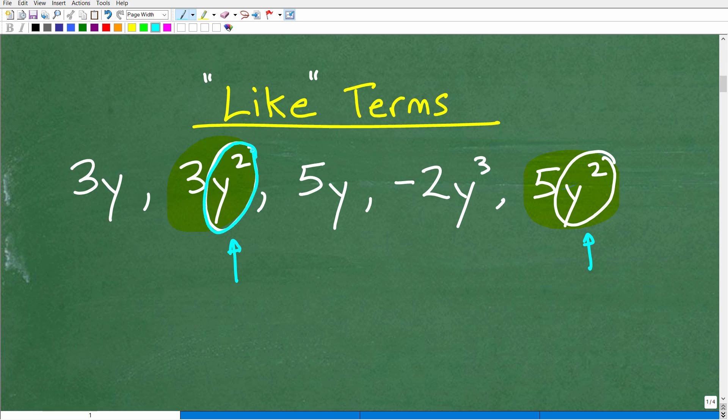So again, you're looking for things with the exact same variable, the exact same letter or symbol to the exact same power. So these two terms are like terms. So what other terms are like? Well, 3y and 5y. They both have exactly a y to the first. And then over here we have negative 2y cubed. There is no other term with a y cubed. So this term is all by itself.